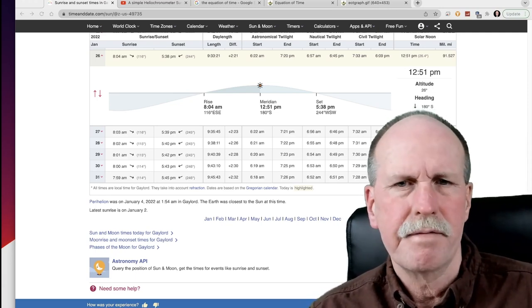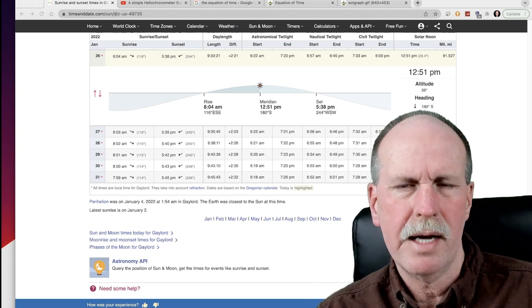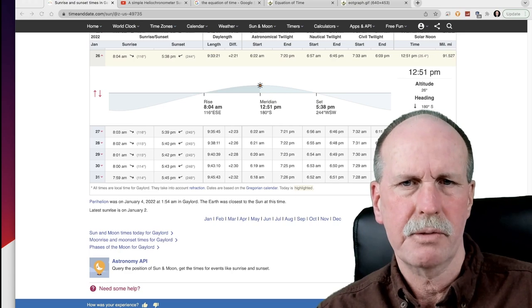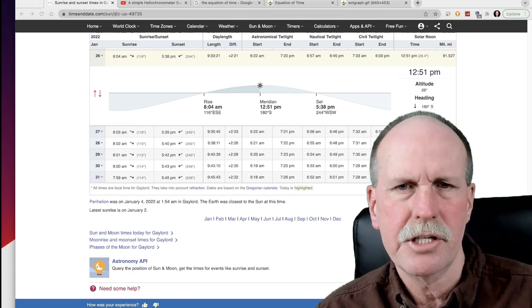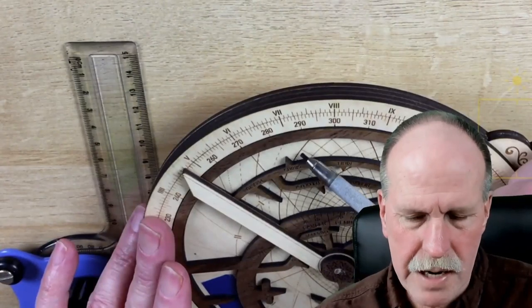Now the other day I put out a video on Twilight and we talked about the three different types of twilight. We talked about civil twilight, nautical twilight, and astronomical twilight. They're marked on the astrolabe as well. Let's have a look.